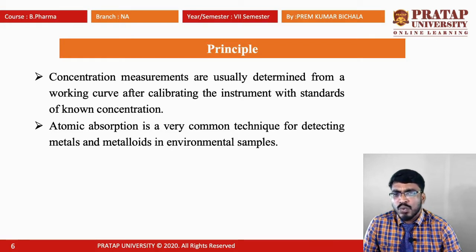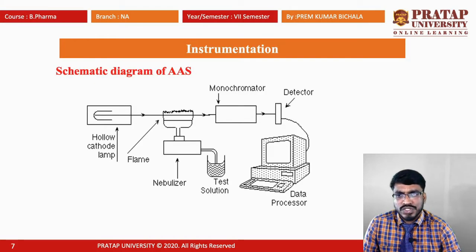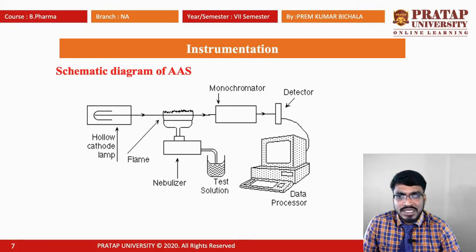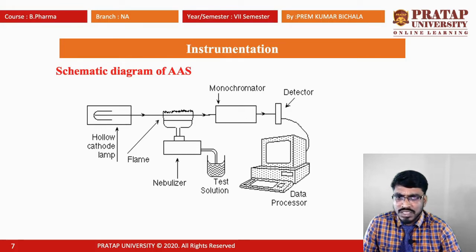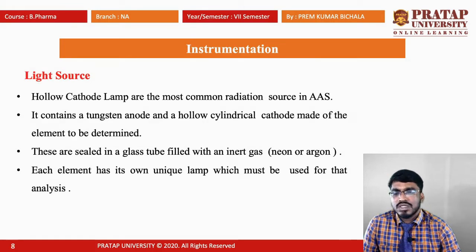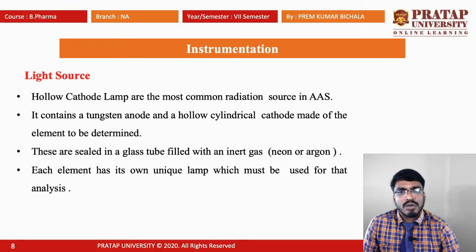Atomic absorption is a very common technique for detecting metals and metalloids in environmental samples. Coming to instrumentation. The following diagram is a schematic diagram of AAS. This diagram contains a hollow cathode lamp, which flame, nebulizers, monochromator, detectors, and test solution. Coming to the first one — the light source. The hollow cathode lamp is the most common radiation source in atomic absorption spectroscopy.